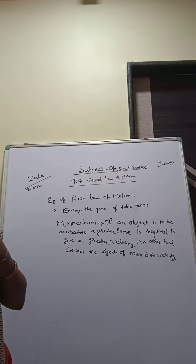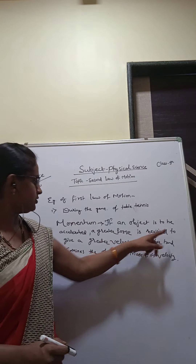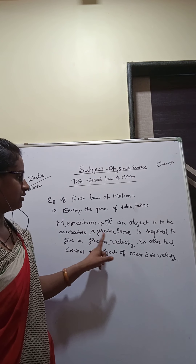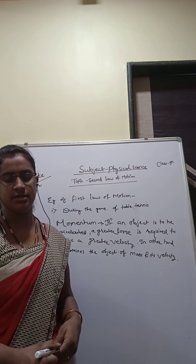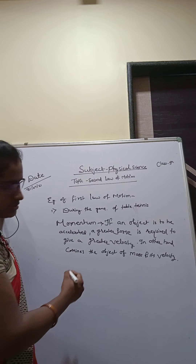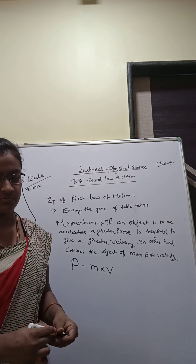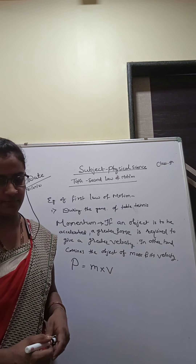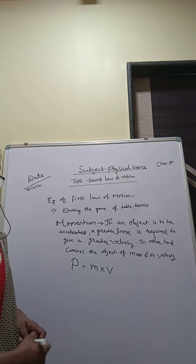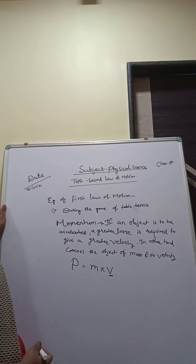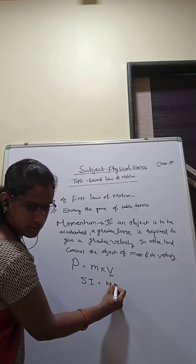Now, what is momentum? Momentum is defined as the product of an object's mass and its velocity, represented as p = mv. Momentum has both direction and magnitude; its direction is the same as that of the velocity. The SI unit of momentum is kilogram meter per second.